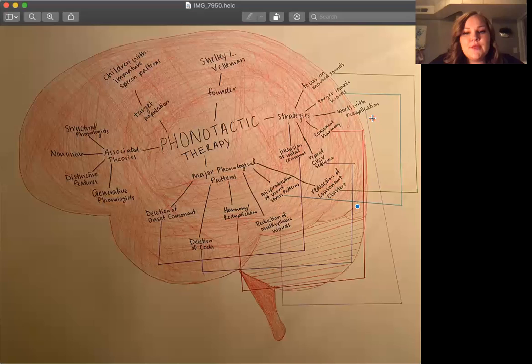Even though the child still isn't producing it correctly, it helps bring awareness to the fact that there's two separate sounds. Ba-ba for bottle is a lot closer than just saying ba. That's one way to help with intelligibility.